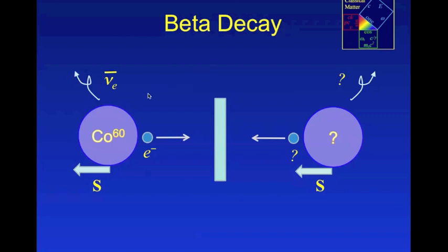If we look at that process in the mirror, of course the velocity gets reversed, but the spin, because that's derived from rotations, is not reversed in the mirror.